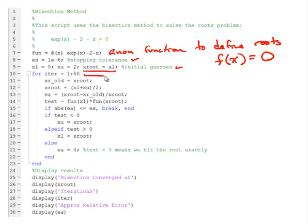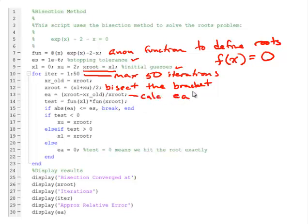We are going to use a for loop, and this is set up with a maximum of 50 iterations. If we haven't converged in 50 iterations there might be something wrong. As we go through the loop the first thing we want to do is define our old root estimate. We will define that as x_r_old. Then we will do our first bisection to bisect the bracket. Then we will calculate ea and test to see which new bracket does the root lie in.